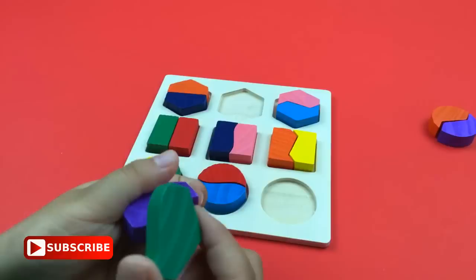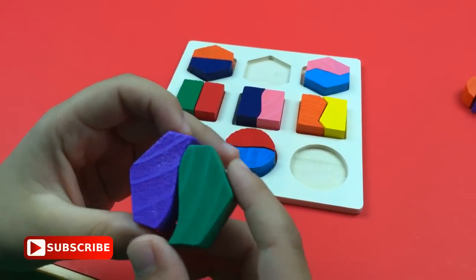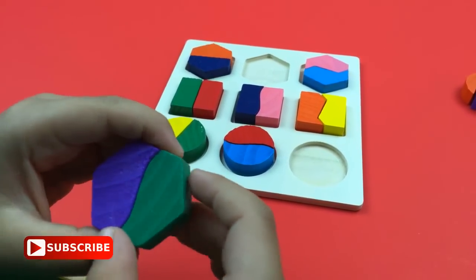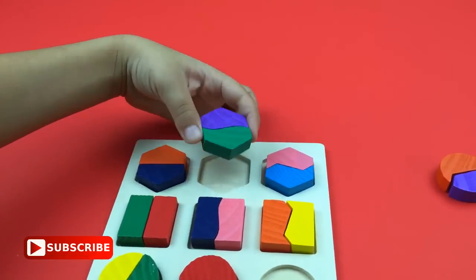You see this? This is green, this is purple, but it's curvy - it has a curved line. A great hexagon.